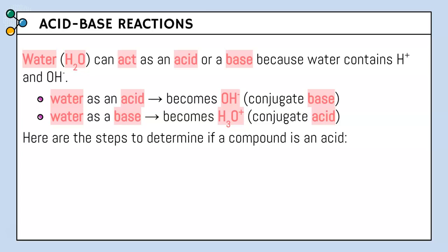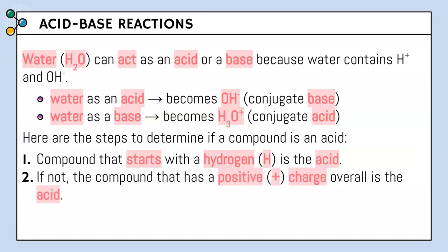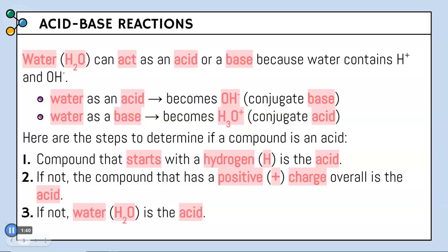Here are some steps to determine if a compound is an acid. If the compound starts with hydrogen, it's going to be an acid. If not, if the compound has a positive charge overall, it's going to be an acid. And if neither of those apply, then water, H2O, will be our acid in that case.